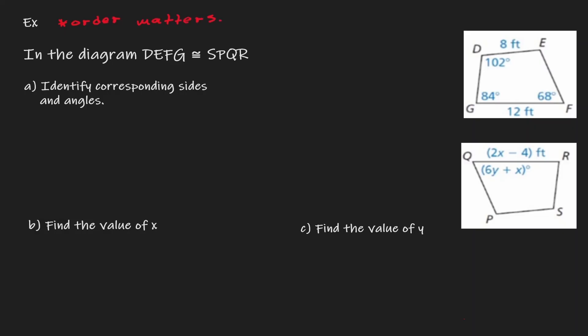What do we mean by the order matters when it comes to congruency? Well, let's take a look at this. Here we have two objects: DEFG — we are looking at this top figure, DEFG — and we have the other object, SPQR.